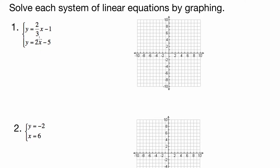We can tell right now that they are going to intersect because their slopes are different. If their slopes were the same, they might be parallel lines, in which case they'd never intersect, or they might be the same line. So we know they're going to intersect somewhere, so let's graph them.